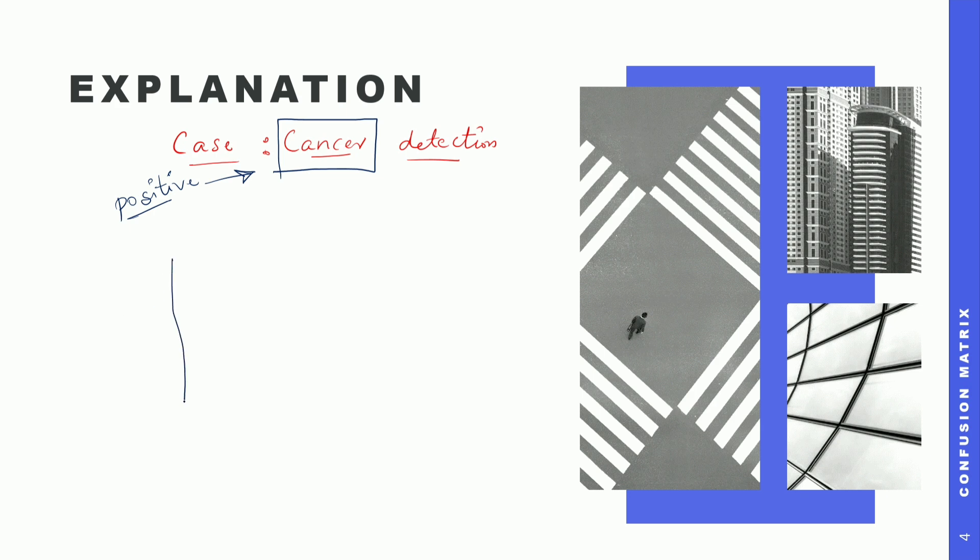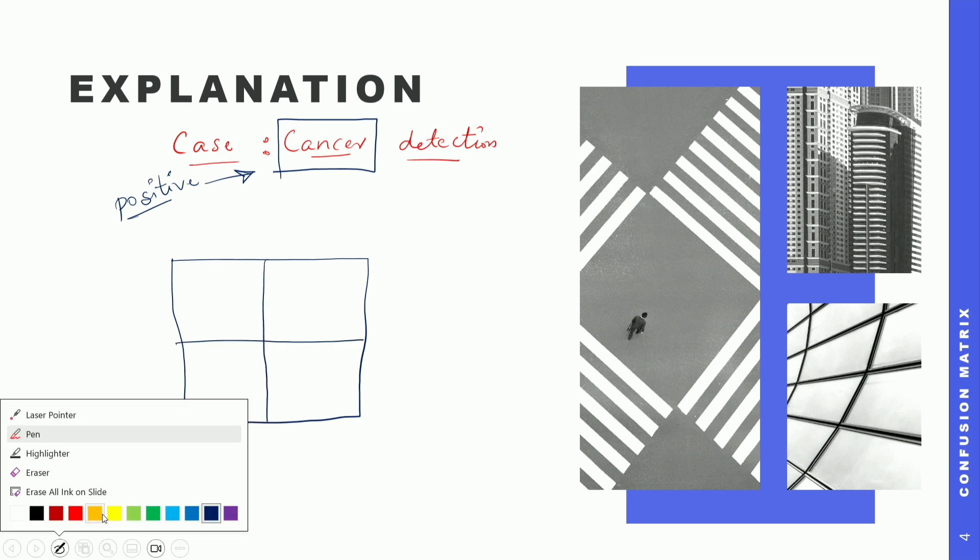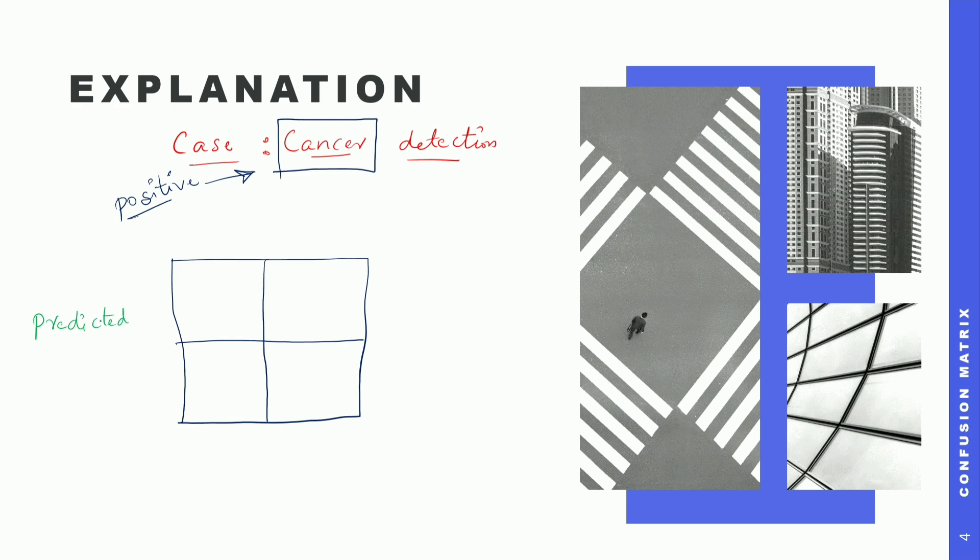Now let's draw the basic confusion matrix and then deep dive into the importance for this particular use case. So here we have the two by two matrix. I will just write two things here. Let this be the predicted. And let this be the actual. So the actual is, say we took 100 patients. We cannot say patients actually - 100 candidates for whom we are checking whether the particular candidate is suffering from cancer or not.